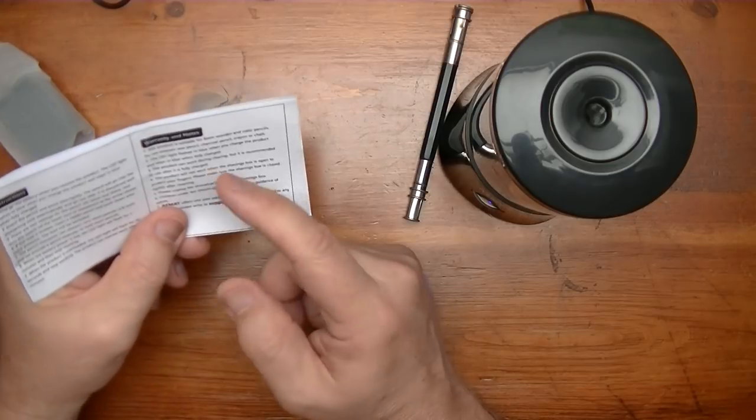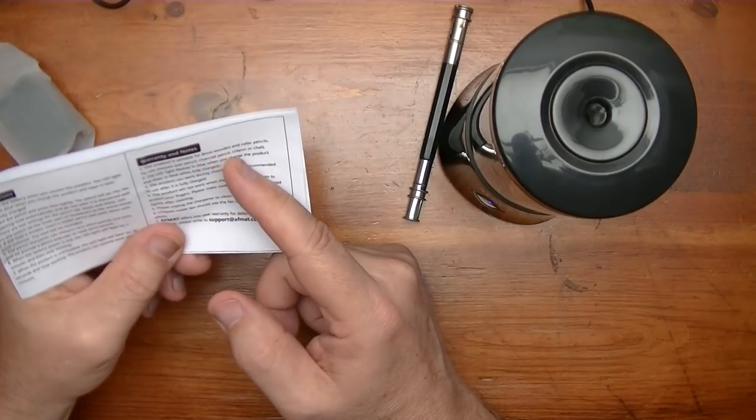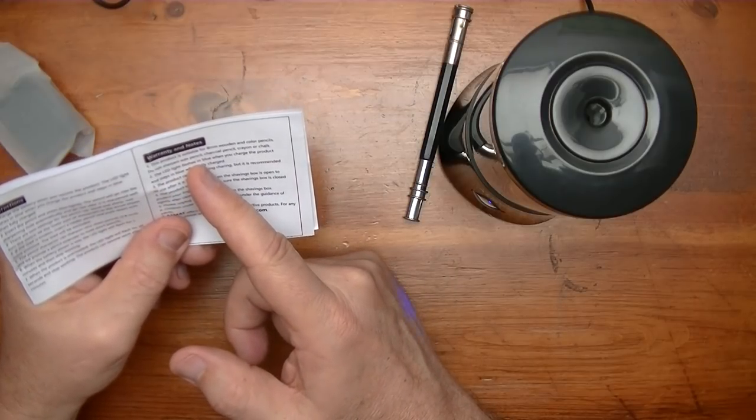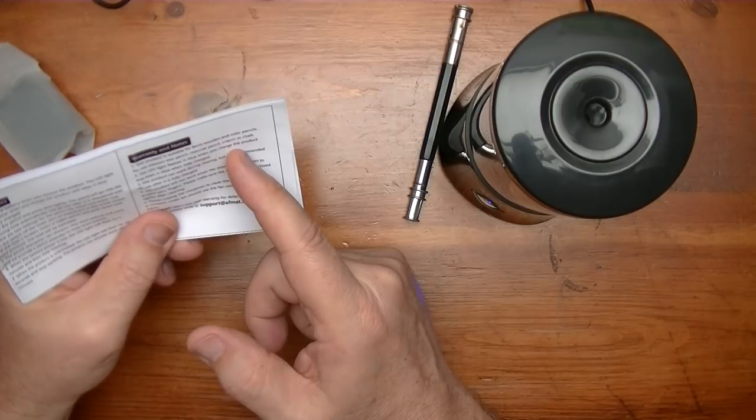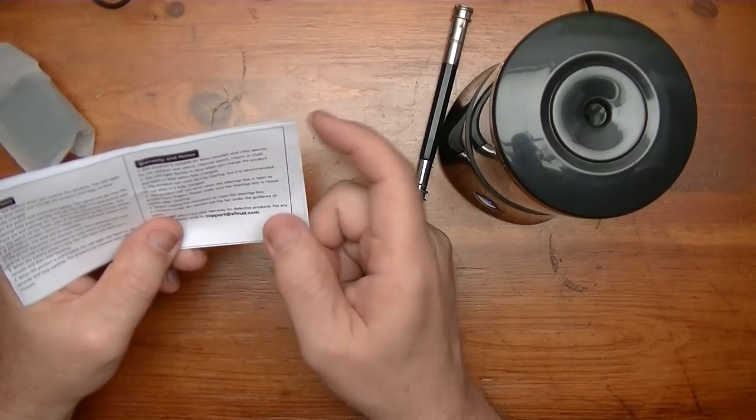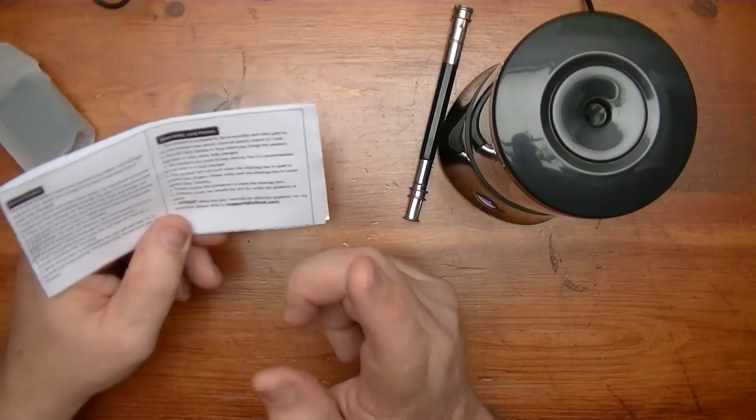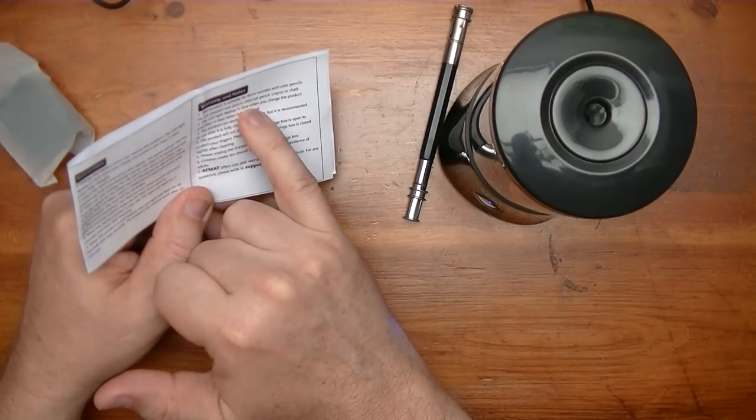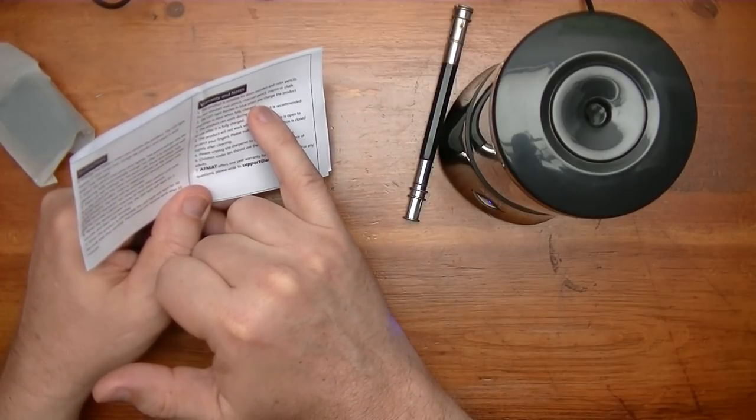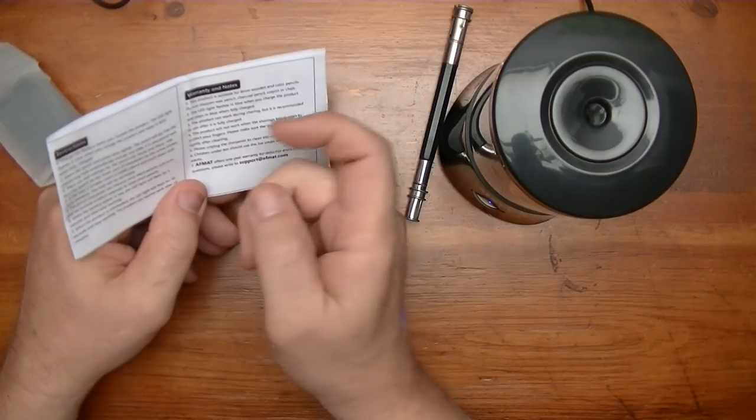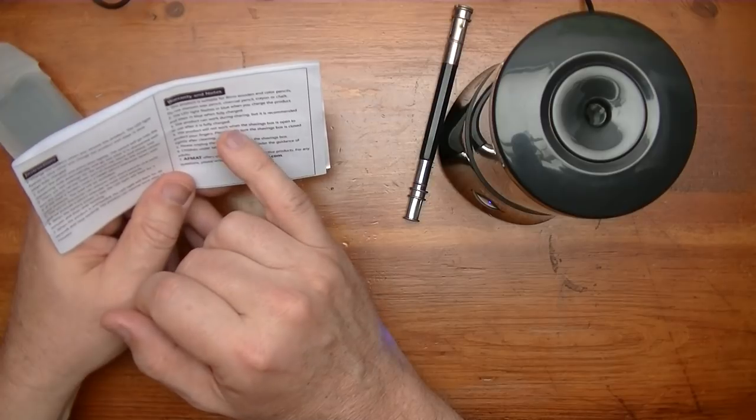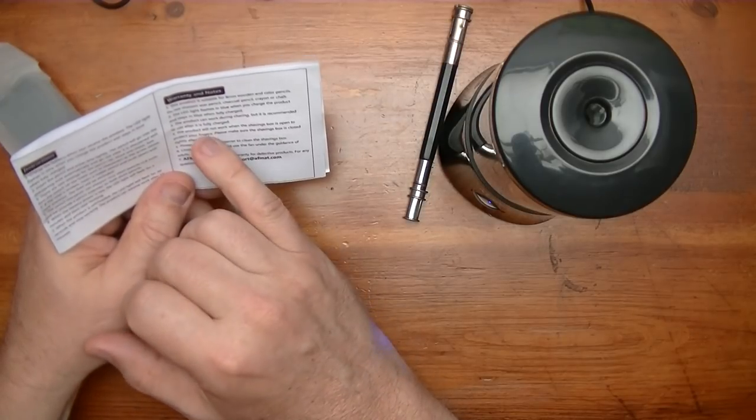Okay so it says it's suitable for eight millimeter wooden and color pencils, but it says do not sharpen wax pencil, charcoal pencil, crayon, or chalk. Okay, I am sad to see it say not to sharpen charcoal pencil, but then I'm glad that I have the other one that I can sharpen my charcoal pencils with. So a little trade-off there.